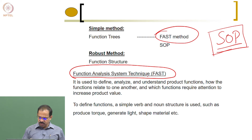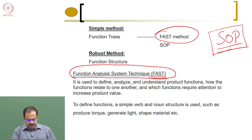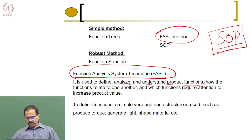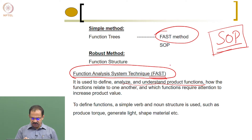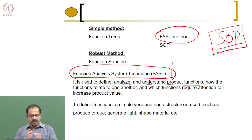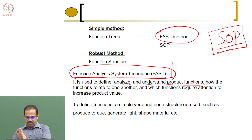Another important method is FAST, the Function Analysis and System Technique. It is used to define, analyze, and understand product functions and how they relate to one another. The whole purpose of functional decomposition is to look at what is the main function of the product and how we can achieve it through many small sub-functions.